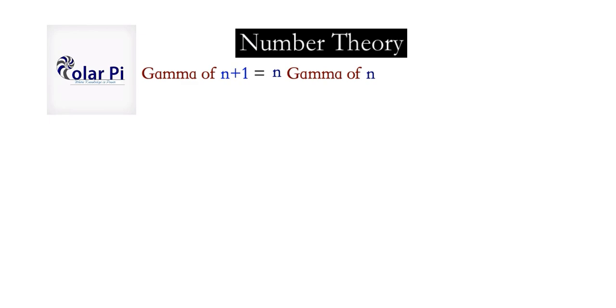Hey guys, welcome. In this video, as the title says, we're going to show that gamma of n plus 1 is equal to n times gamma of n. By definition, gamma of n is equal to this integral here. Notice where n appears—right here and then right there.